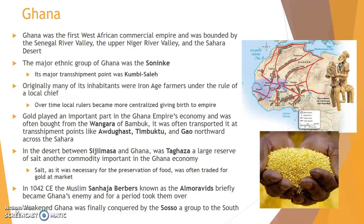Ghana, the first West African commercial empire, was bounded by the Senegal River valley, the upper Niger River valley, and the Sahara Desert, in what is today Mali and southern Mauritania — about a thousand miles northwest of the present-day country of Ghana. Ghana's terrain in the Sahel was predominantly grassland and its major transshipment point was Kumbi Saleh. Many of its inhabitants were Iron Age farmers under the rule of a local chief. The major ethnic group and rulers of Ghana were the Soninke. Over time, local rulers were integrated into a more centralized administration that ultimately evolved into imperial Ghana.